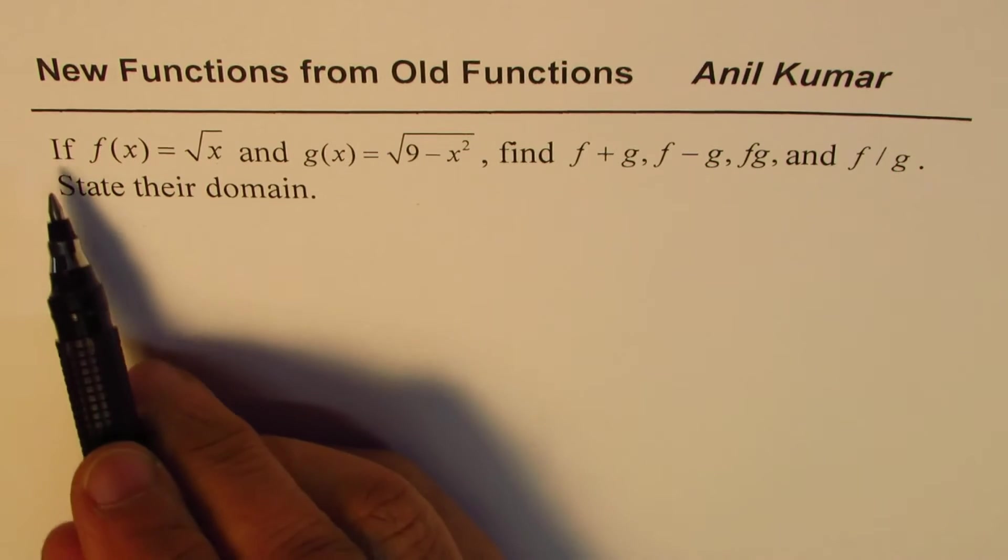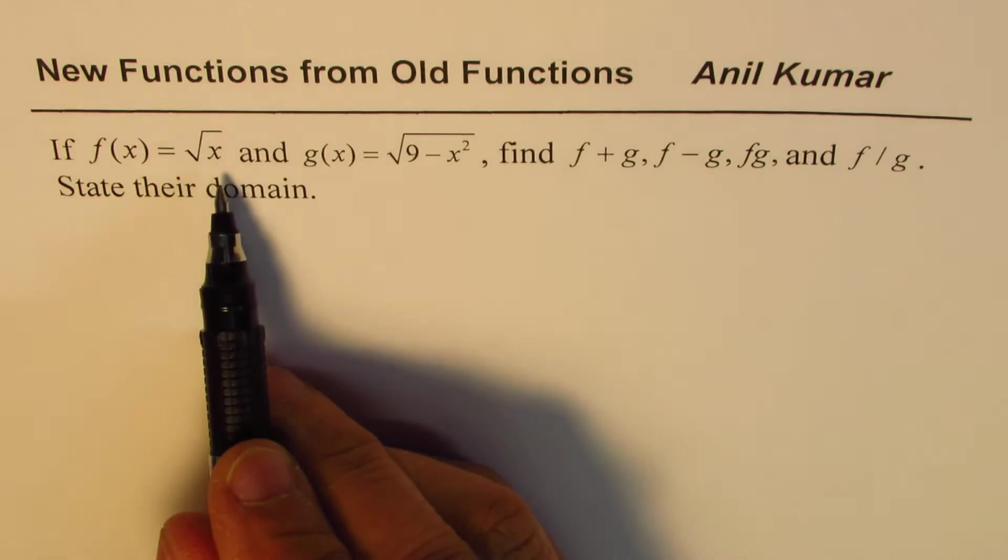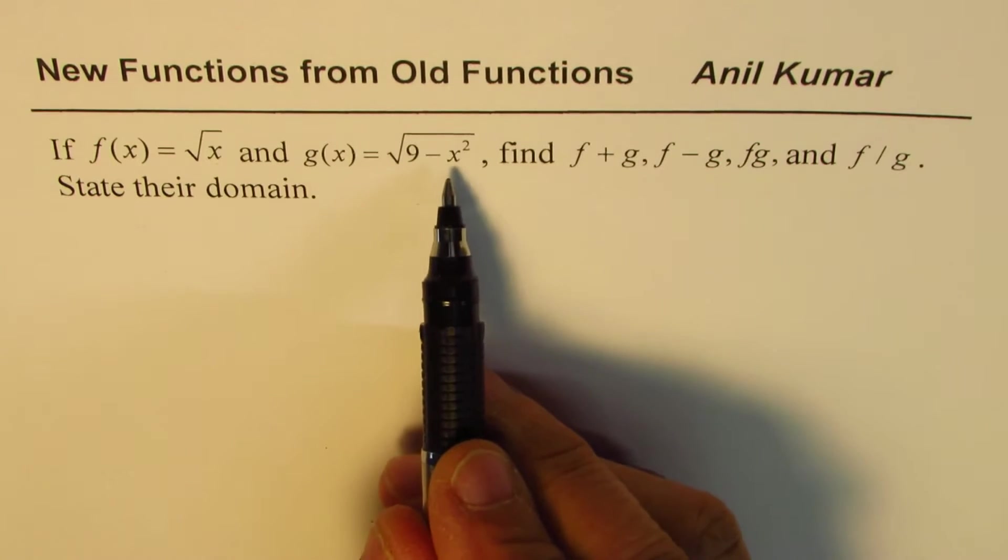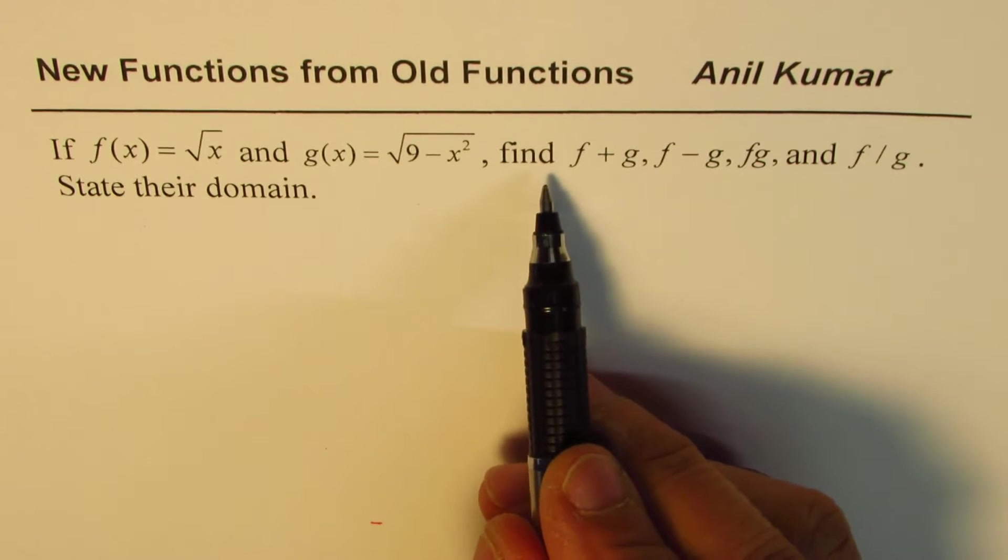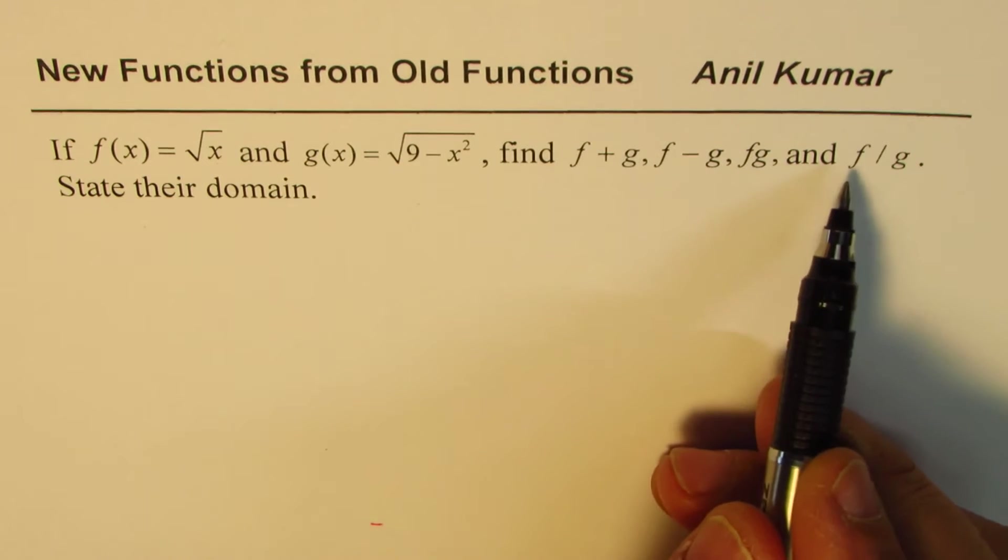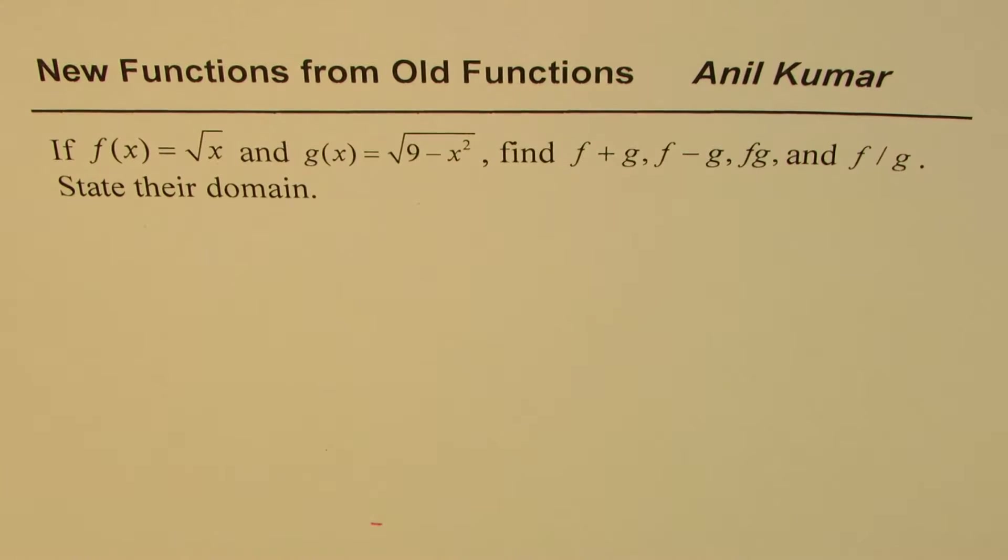The example here is if f(x) equals square root of x and g(x) equals square root of 9 minus x squared, find f plus g, f minus g, f times g, and f divided by g. State their domains.